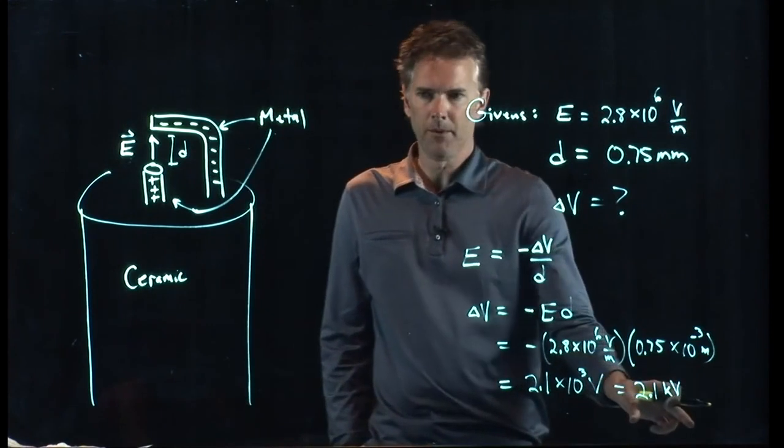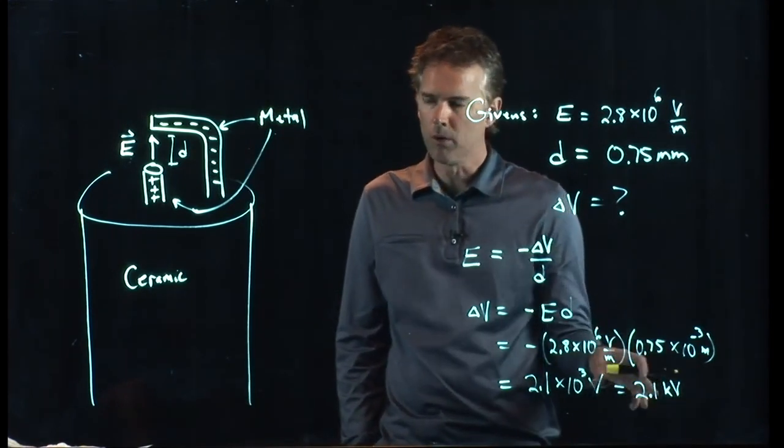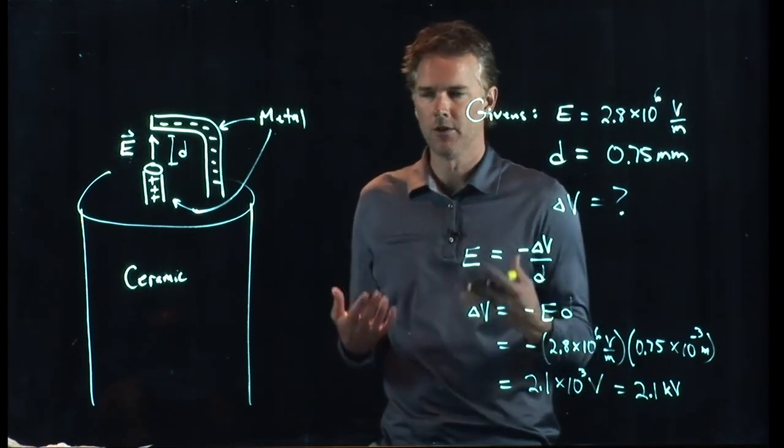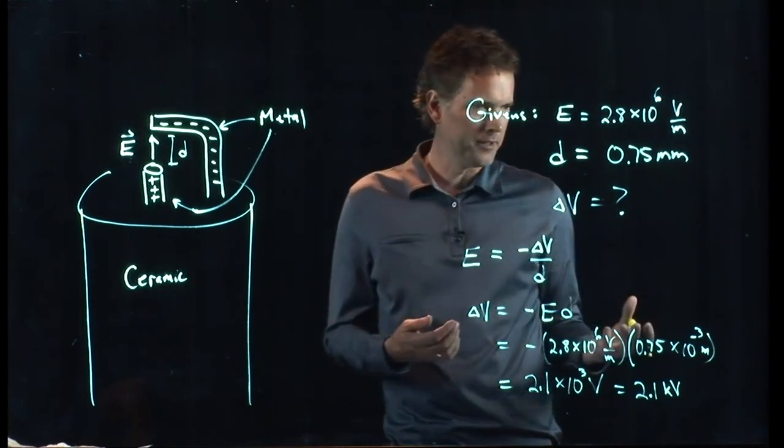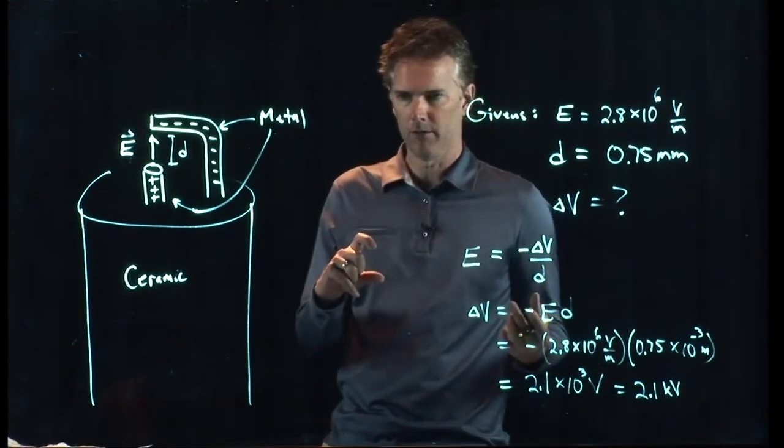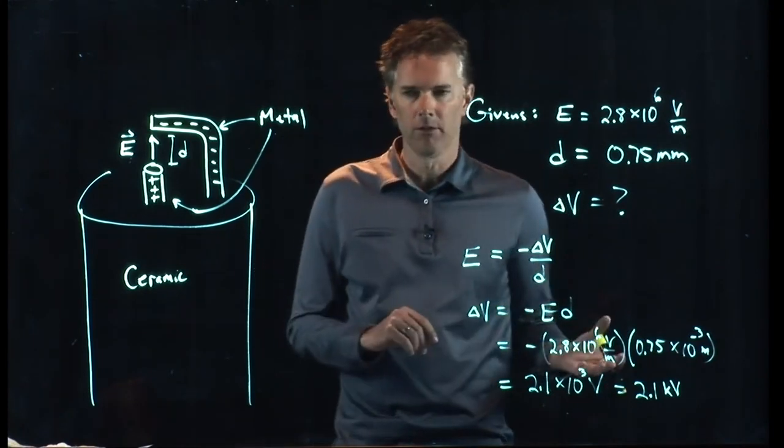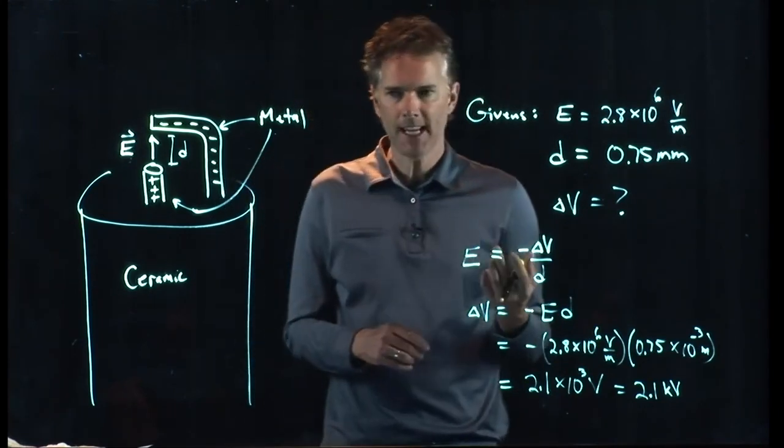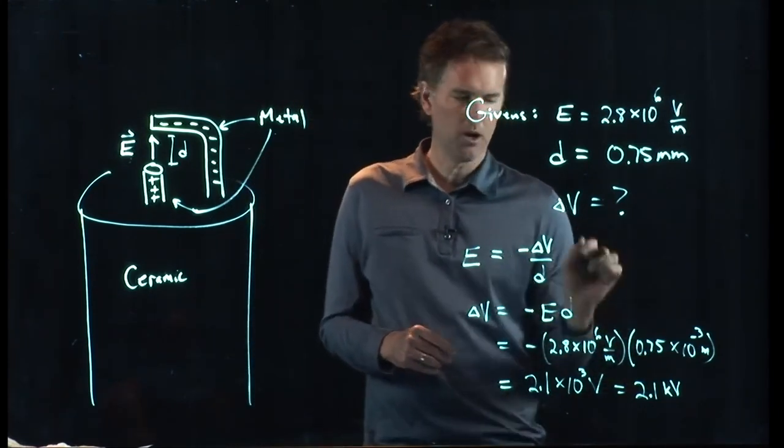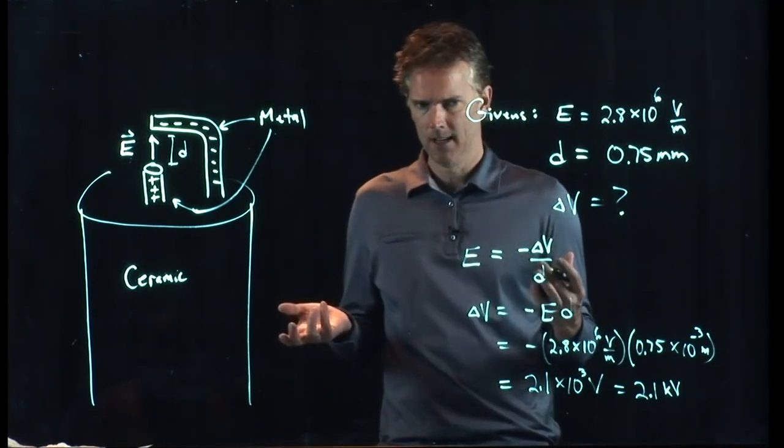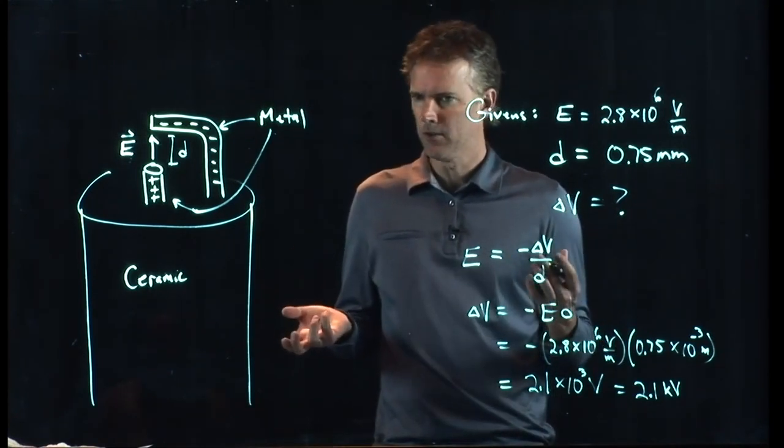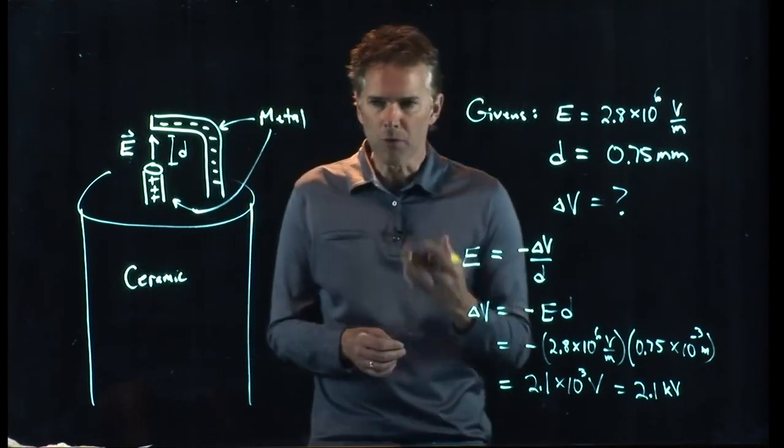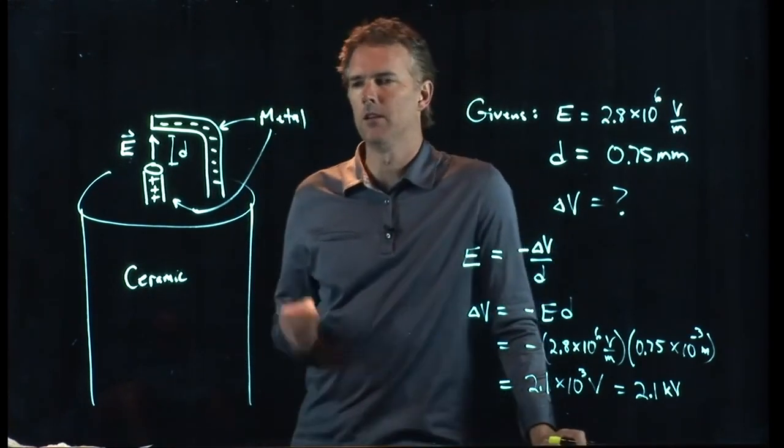That seems like a pretty big number, right? 2,100 volts. When you think about volts and you think about voltages that you're used to, you can talk about the voltage of a AA battery. It's 1.5 volts. A 9 volt battery is obviously 9 volts. Your wall plug coming out of the wall has an RMS voltage of about 115 volts. And now we're talking about 2,100 volts. So that seems like a lot and it seems a little dangerous. And yet this sort of device you are all extremely familiar with and you just don't know it yet.